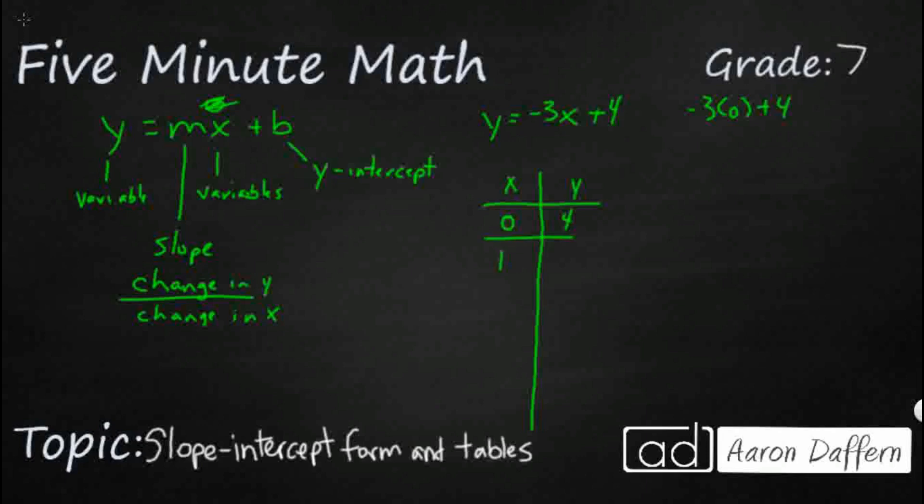Now, if we put x as 1, we're just going to plug this in. And this is one way we can make tables. We've got negative 3 plus 4. So that's just going to be positive 1.